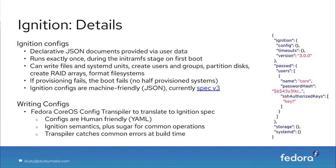Because Ignition is not very human-friendly, we have a tool called the Fedora CoreOS Config Transpiler, which is written in YAML and has some 'sugar' on top that automatically writes out the more tedious parts of Ignition for you.